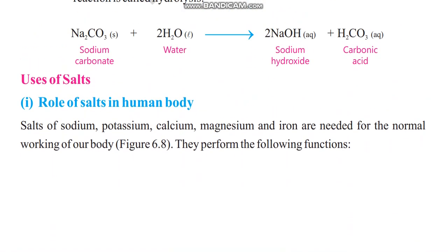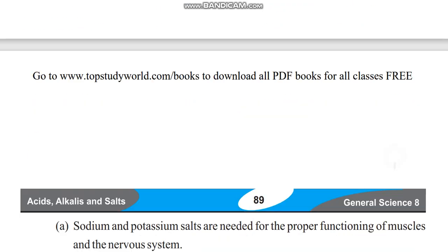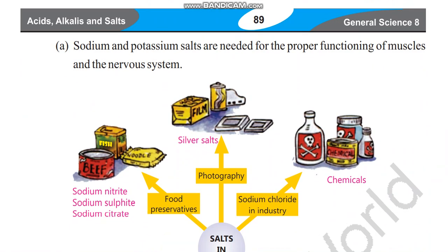Next we have uses of salt. Regarding the role of salt in the human body: salts of sodium, potassium, calcium, magnesium, and iron are needed for the normal working of our body. Sodium and potassium salts are needed for the proper functioning of muscles and the nervous system.